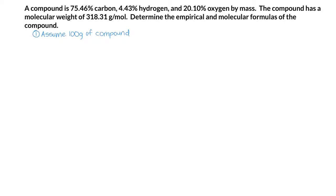Since we have percentage, we will assume that we have 100 grams of the compound so that we can convert those percentages into mass. Our compound will contain 75.46 grams of carbon, 4.43 grams of hydrogen, and 20.10 grams of oxygen.